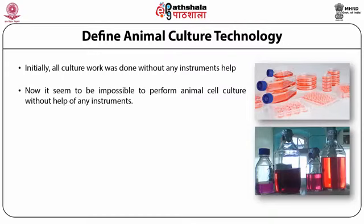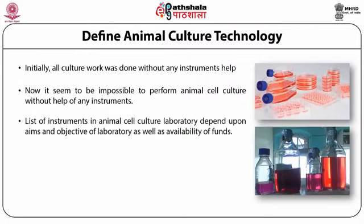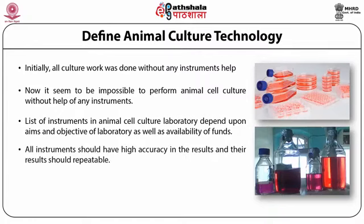The list of instruments required in an animal cell culture laboratory depends upon the aims and objectives of your laboratory as well as the availability of funds. If you have plenty of funds you can purchase all instruments. If funds are limited, you require a prioritized list of which instruments to purchase first. All instruments should have high accuracy, and their results should be repeatable through the experimental system.